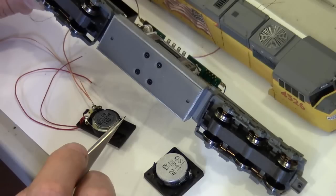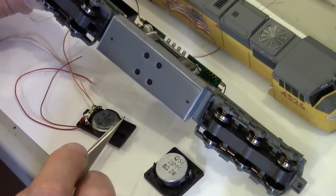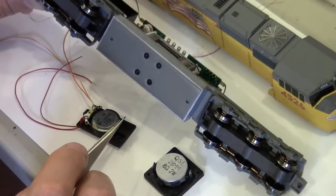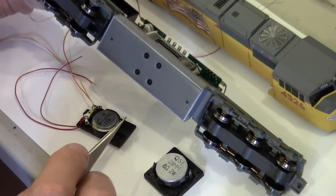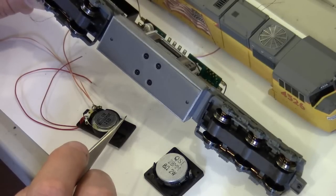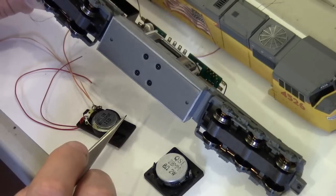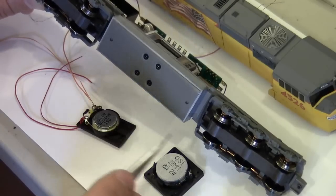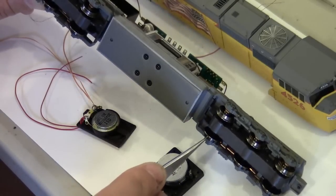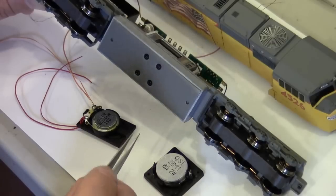And no matter if you use flex track or you hand lay your own, such as myself, you are going to encounter uneven track. It's just the nature of model railroading. No matter how hard we try, things just aren't always perfectly flat, straight, and even. And they're not even even on the prototype.